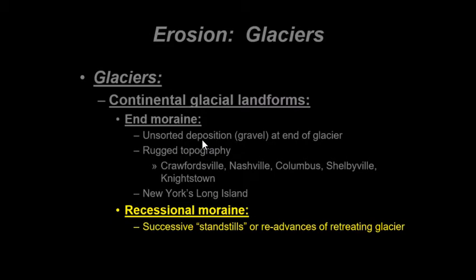Recessional moraines are essentially successive or repeated standstills or stops, and then readvances of a retreating glacier. The glacier is retreating and melting, but we might get maybe a few hundred or few thousand years of cooling. Then the glacier advances, creates a mini end moraine, retreats, advances again, and retreats again.